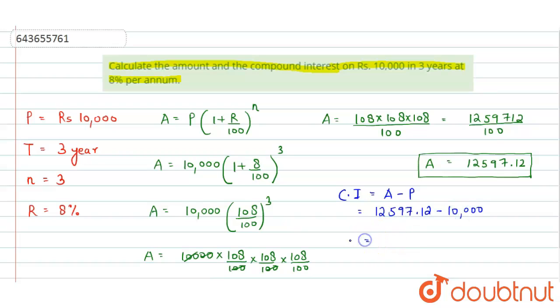Therefore, CI (Compound Interest) = Rs. 2,597.12. This is the value of the compound interest.